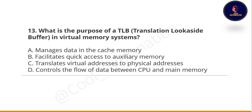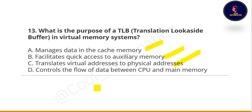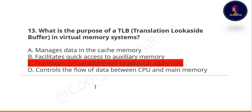Next question: what is the purpose of the TLB (Translation Lookaside Buffer) in virtual memory systems? Option A: manages data in the cache memory. Option B: facilitates quick access to auxiliary memory. Option C: translates virtual addresses to physical addresses. Option D: controls the flow of data between CPU and main memory. The correct option is C — translates virtual addresses to physical addresses.